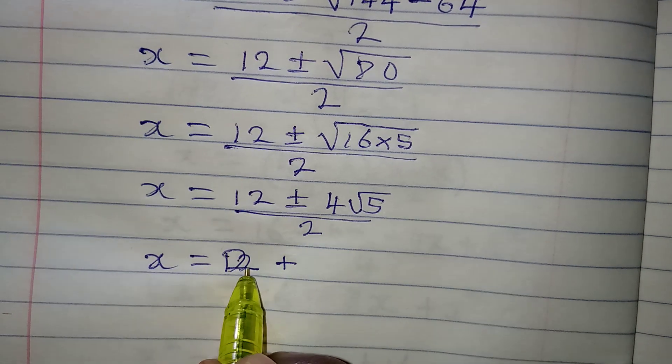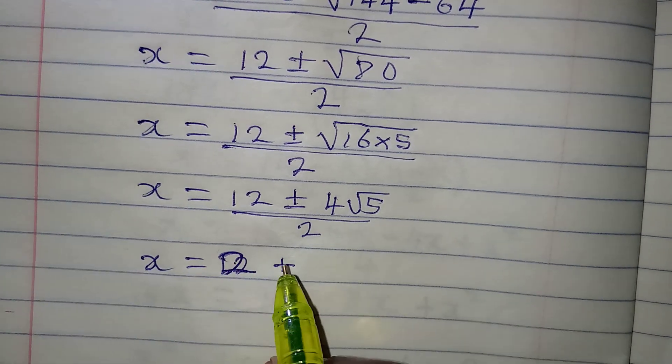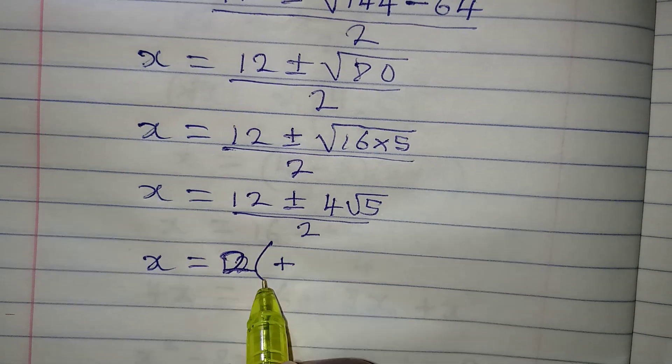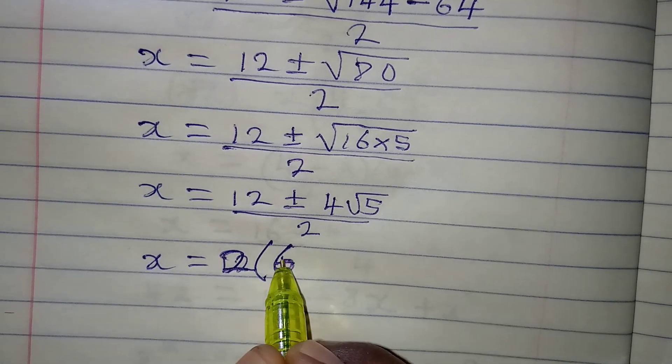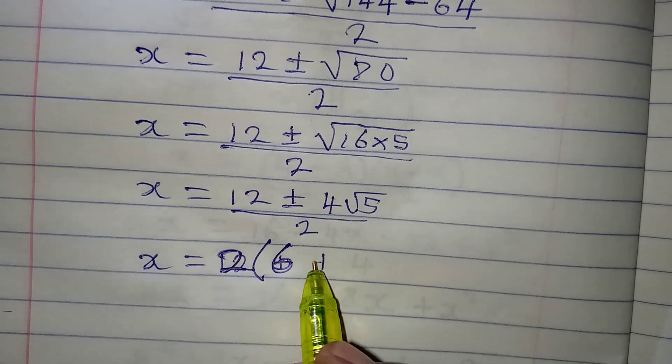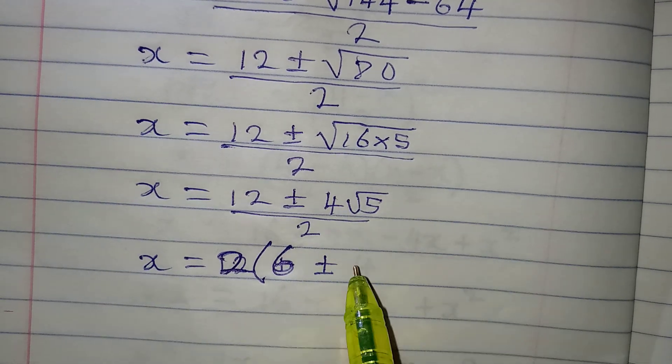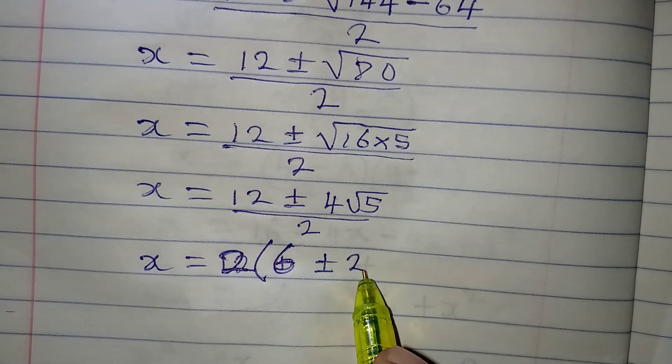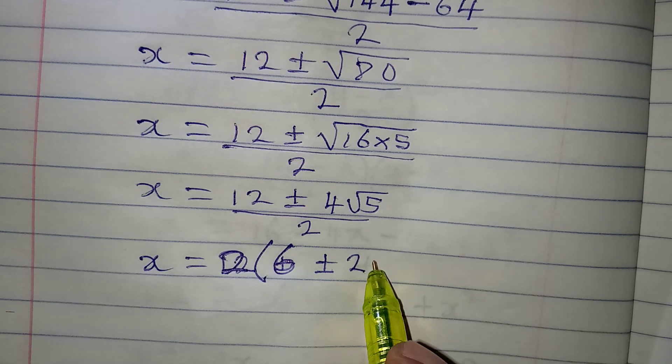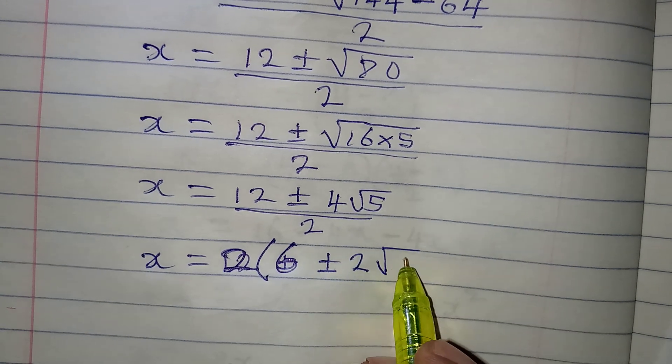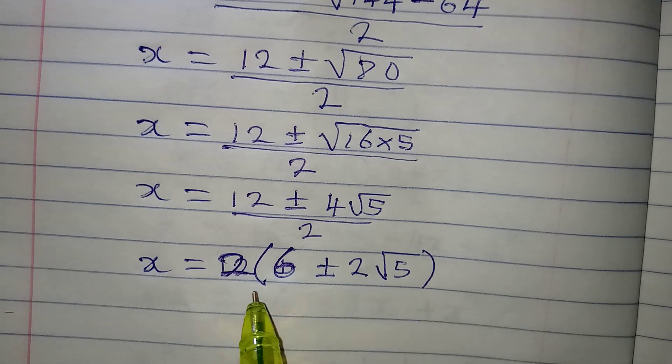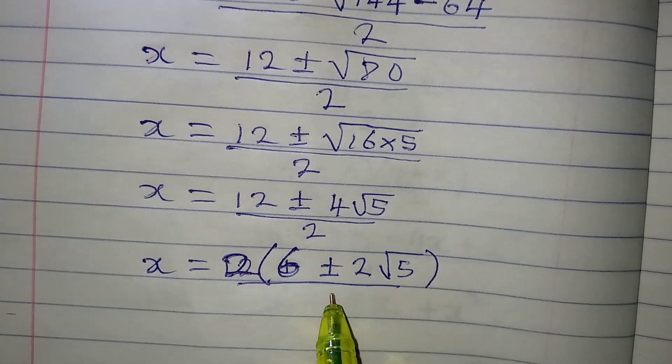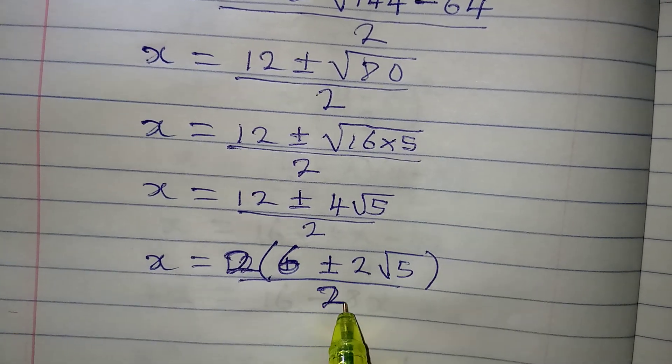That means that we'll have 2 outside. Then inside of the bracket, I'm going to have 6, then plus or minus. 2 has already gone out, so we'll have another 2 over here. Then we have square root of 5. The whole of this will now be divided by 2.